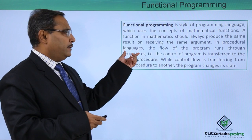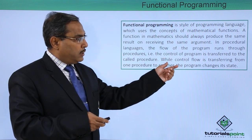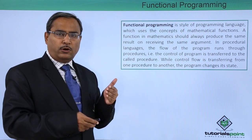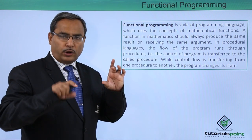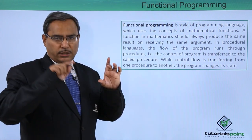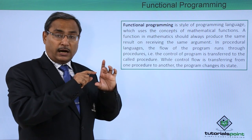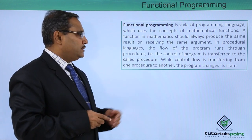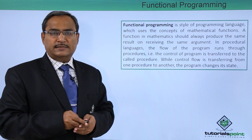In procedural languages, the flow of the program runs through procedures, and the control of the program is transferred to the called procedure. Whenever a procedure is called from a certain code, the control is transferred to the respective procedure body, where it gets executed. After completion, the control comes back to the line just after the calling procedure statement. While control flow is transferred from one procedure to another, the program changes its state.